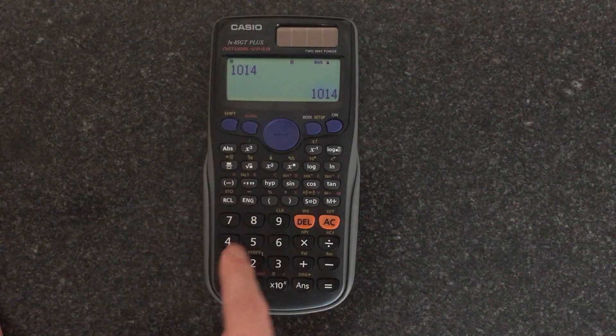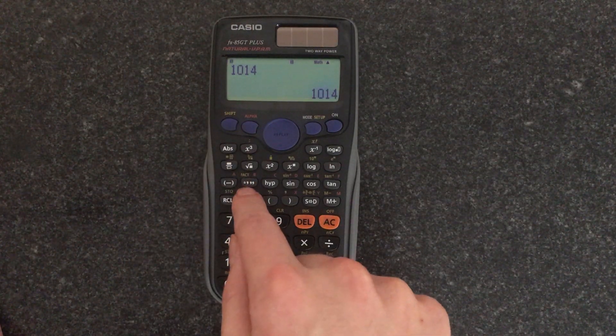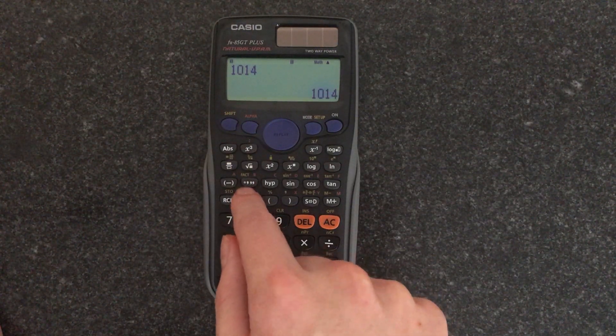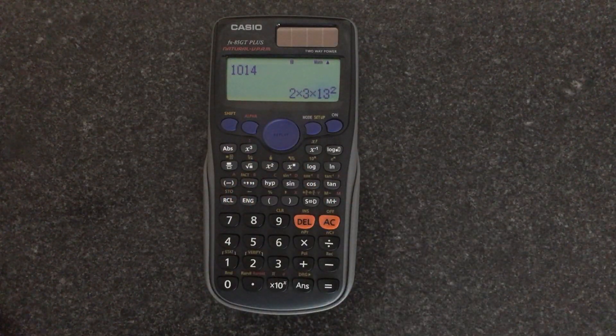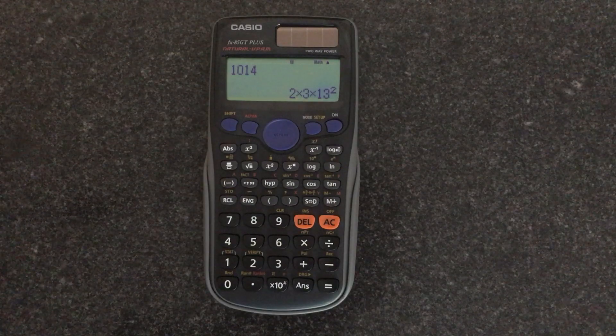Then we need to go shift, and there is where it says fact here, and that's for factorization. So press shift and then fact, and it does it for you. So you get 2 times 3 times 13 squared. So that's your prime factorization.